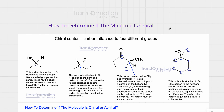I want to draw your attention to something: a lot of times in textbooks, hydrogens on carbons are not shown. I did show hydrogens on all my examples, but most likely yours will not be shown. You just need to remember that every carbon wants to have four bonds. So if it has one, two, or three bonds, that means there is a hydrogen that was not shown and you would have to add it yourself.